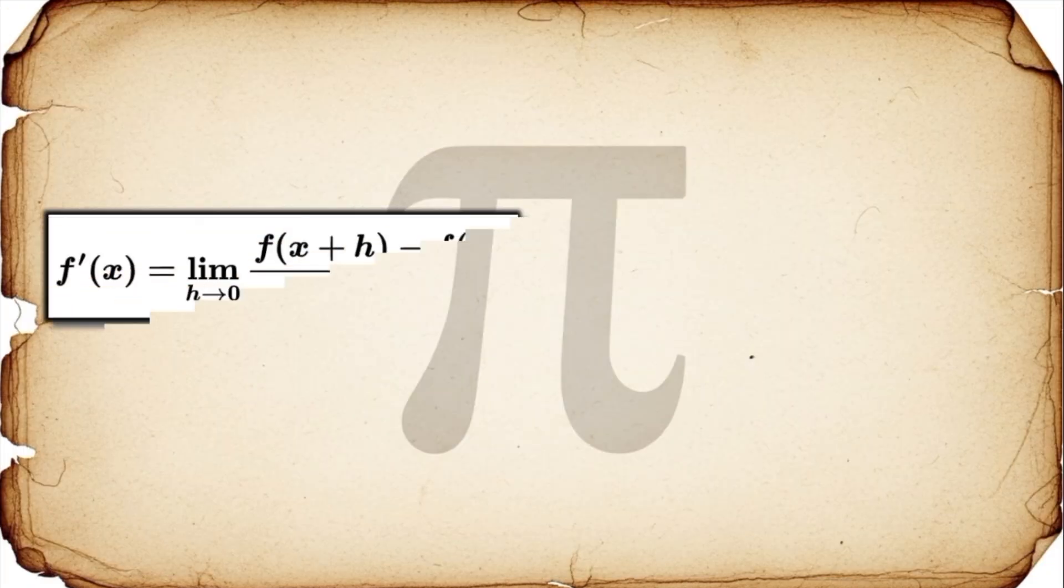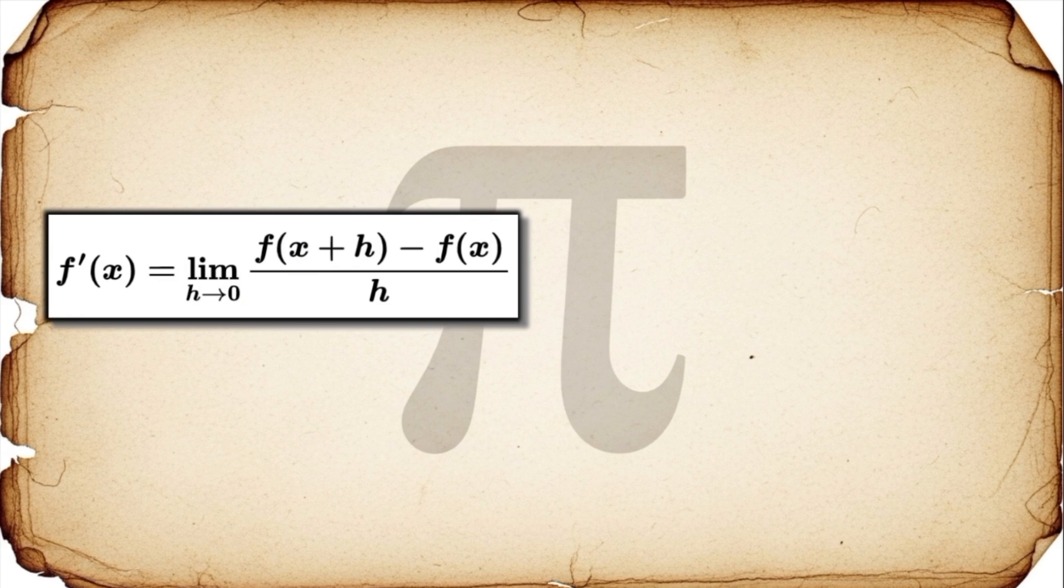Okay, on the left, we have the classic, the definition of the derivative. f prime of x is the limit as h approaches zero of the fraction f of x plus h minus f of x all divided by h. It's the slope of the tangent line. We all know it. We all love it.